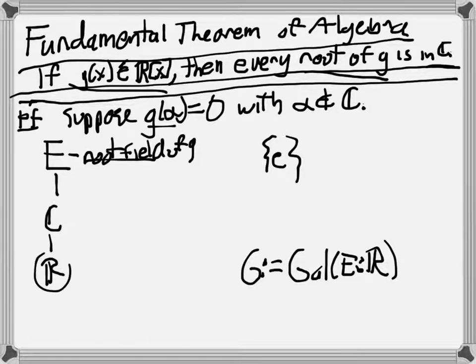And also we're in characteristic zero, so it's separable. So we have a Galois extension. And then we're going to get some sort of subgroup here corresponding to C. So this is the basic setup. We're going to look at it like this, and we're going to go in a couple of steps here.